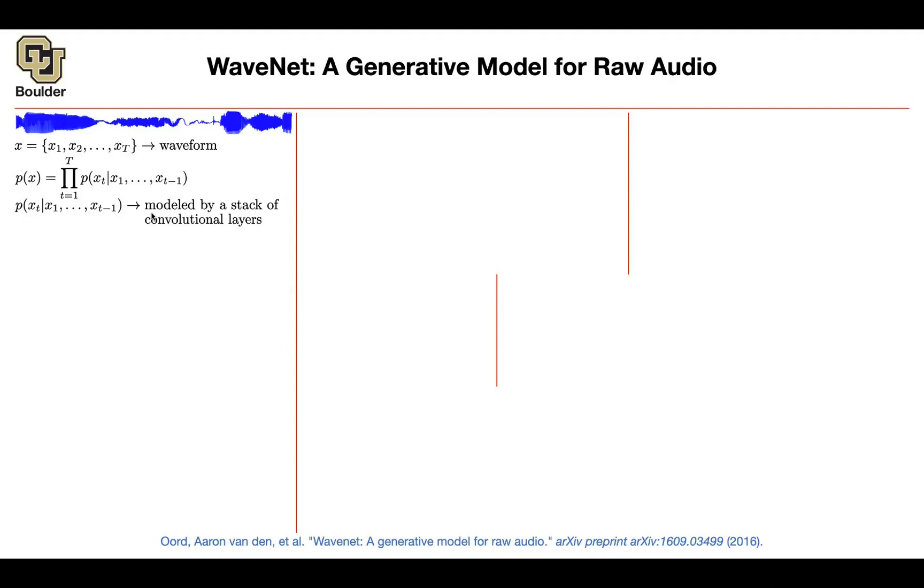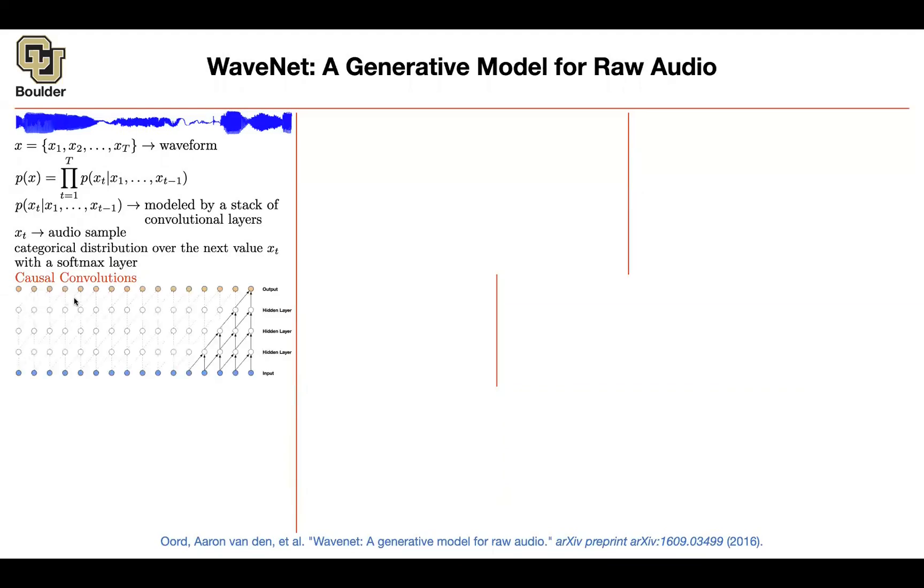This one, we are going to model by a stack of convolutional layers. Xt is a sample from your audio, and we want to put a categorical distribution over the next value. You cannot use any type of convolution because this is a predict next sample. So we are going to use causal convolution, which is not going to look into the future. It's always going to look into the past. And this is going to have a receptive field of five. Why? Because one, two, three, four, five samples in your input are impacting your output.